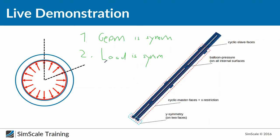Here you can see the stent geometry — the symmetrical part. What we will do is apply symmetry on the outer and inner surfaces, and also symmetry on the lower surfaces. We will fix one side and apply the force on the inner surfaces. That gives us our simulation model. Our workflow today will be: import the geometry, create a mesh, set up the simulation describing how the stent interacts with the balloon and vessel, and finally analyze the results and do post-processing.